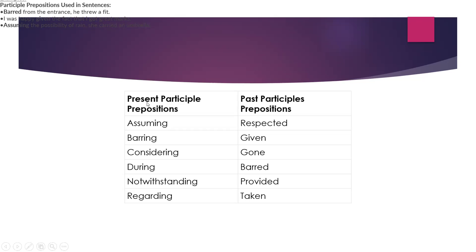Present participle prepositions use the -ing form. Examples include: assuming, barring, considering, reviewing, notwithstanding, regarding. Past participle prepositions use the -ed form. Examples include: respected, given, gone, provided, and taken.